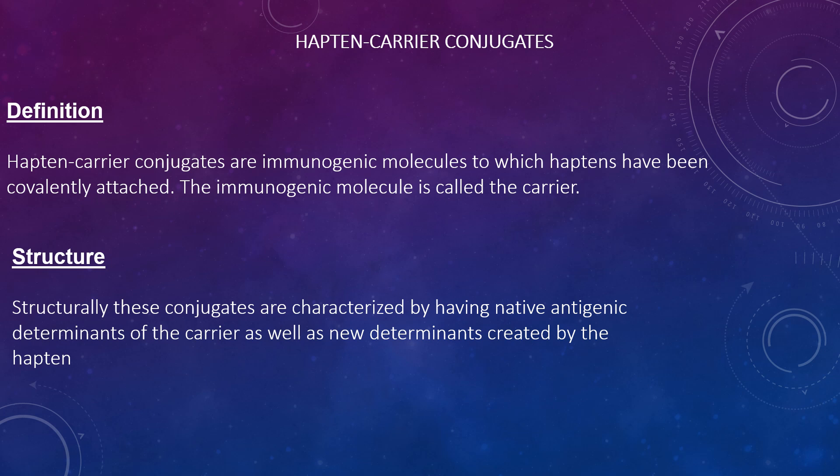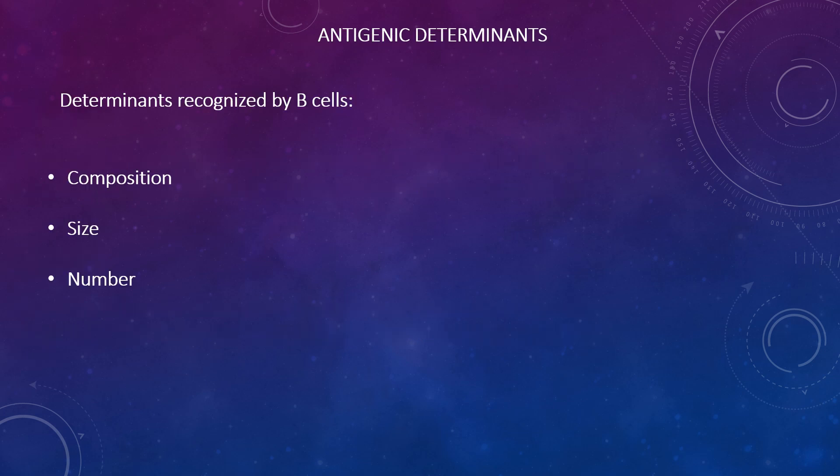Hapten-carrier conjugates are immunogenic molecules to which haptens have been covalently attached; the immunogenic molecule is called the carrier. These conjugates are characterised by having the native antigenic determinants of the carrier as well as new determinants created by the hapten. The actual determinant created by the hapten consists of the hapten and a few adjacent residues, although antibodies produced to that determinant will also react with the free hapten. The type of carrier determinants determines whether the response will be T-independent or T-dependent.